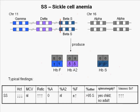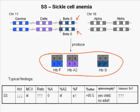In SS homozygous sickle cell anemia, both beta globin genes carry the sickle point mutation. Three hemoglobins are produced: small amounts of hemoglobin A2 and variable but somewhat elevated levels of fetal hemoglobin, with the bulk being sickle hemoglobin. These individuals have a fairly severe chronic hemolytic anemia with low hematocrit and elevated reticulocyte count.